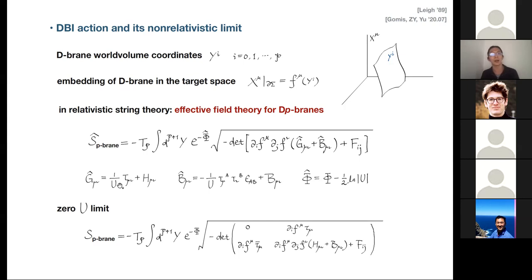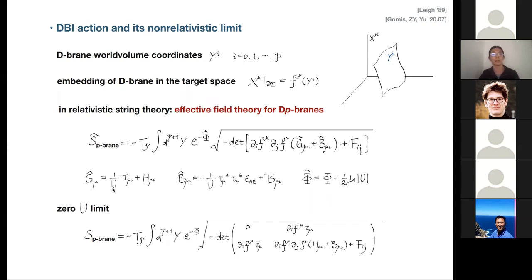In front of the N N-bar term we have a coupling called u. To go to the non-relativistic corner, we want to send u to zero. Yesterday I emphasized the renormalizability of the sigma model so we can define a completely self-contained corner of non-relativistic string theory without resorting to the full relativistic string theory.